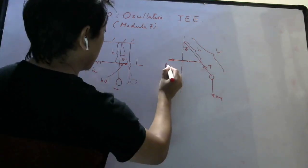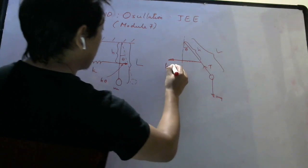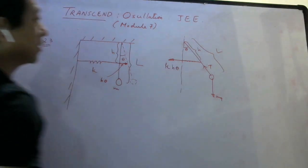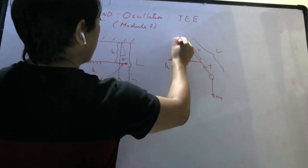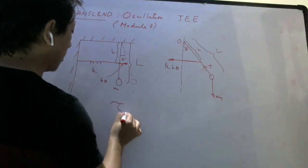The extension of the spring is H theta. Spring force will be K into extension, which is H theta. These are the three forces on the pendulum. Now it is going to oscillate about this point, so let us calculate torque about that point.